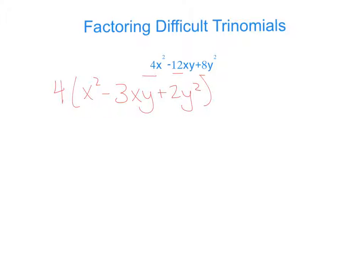Now, again, we can treat it just like a normal one where we have x squared minus 3x plus 2, and we would say factors of 2 that add up to negative 3, which would be negative 2, negative 1.